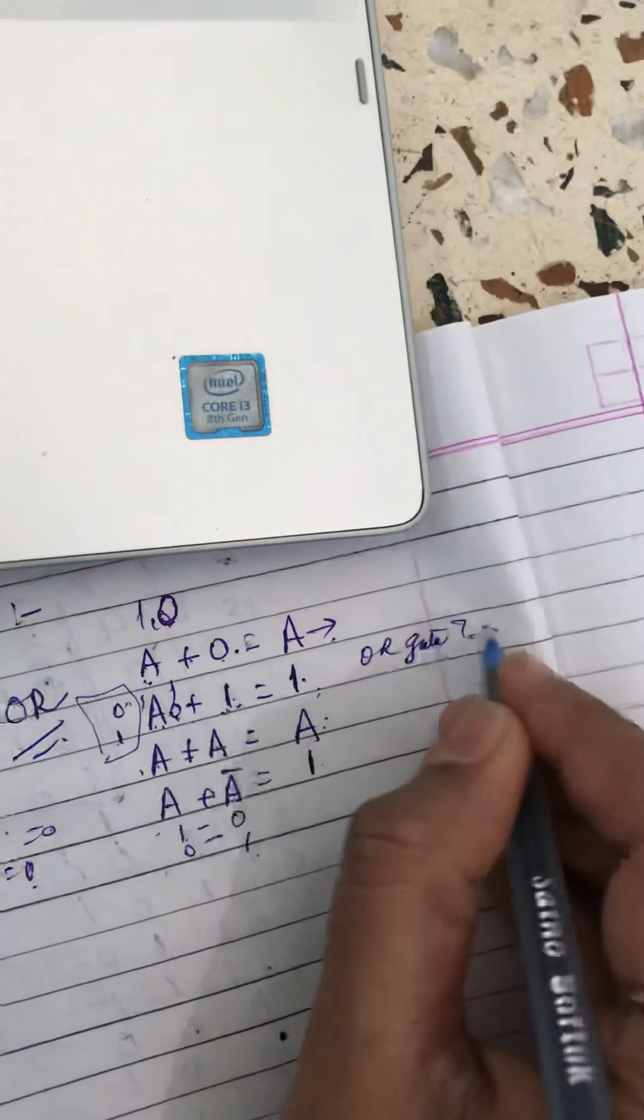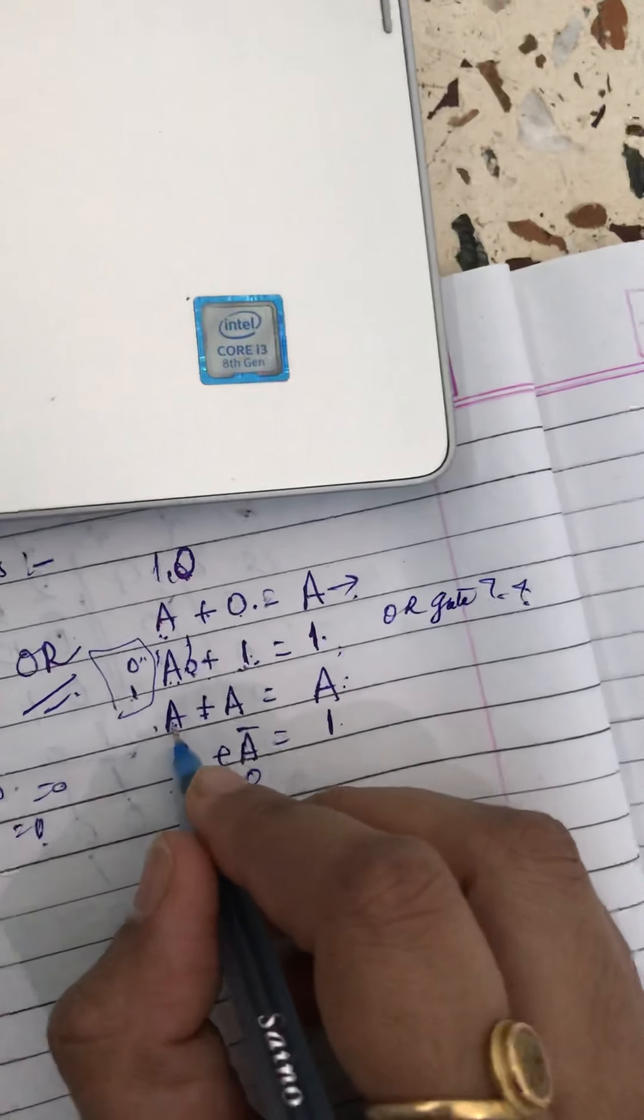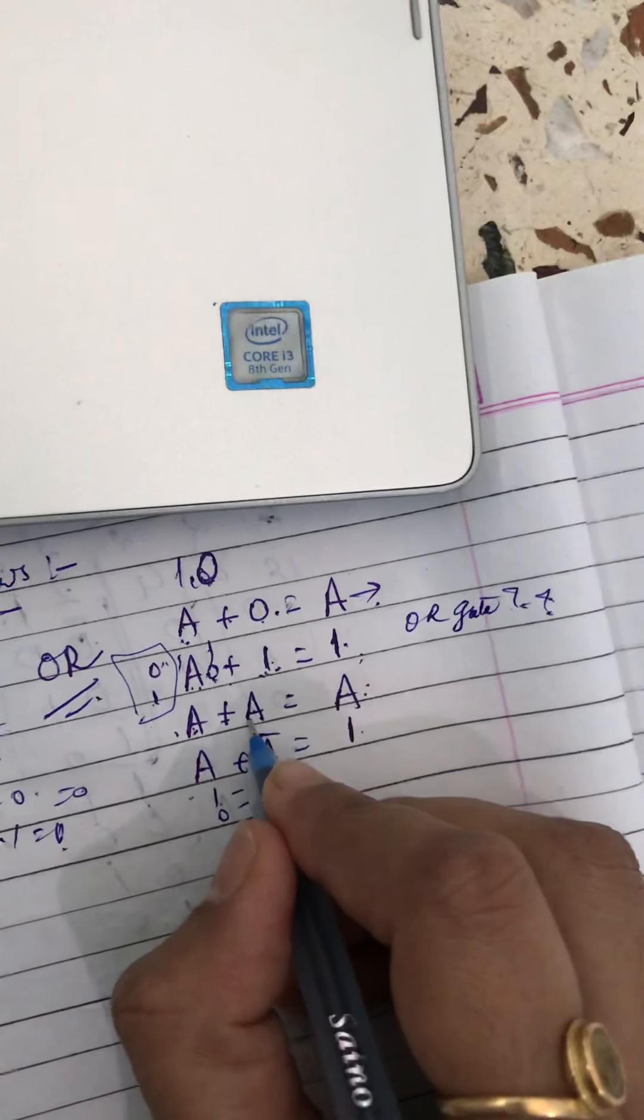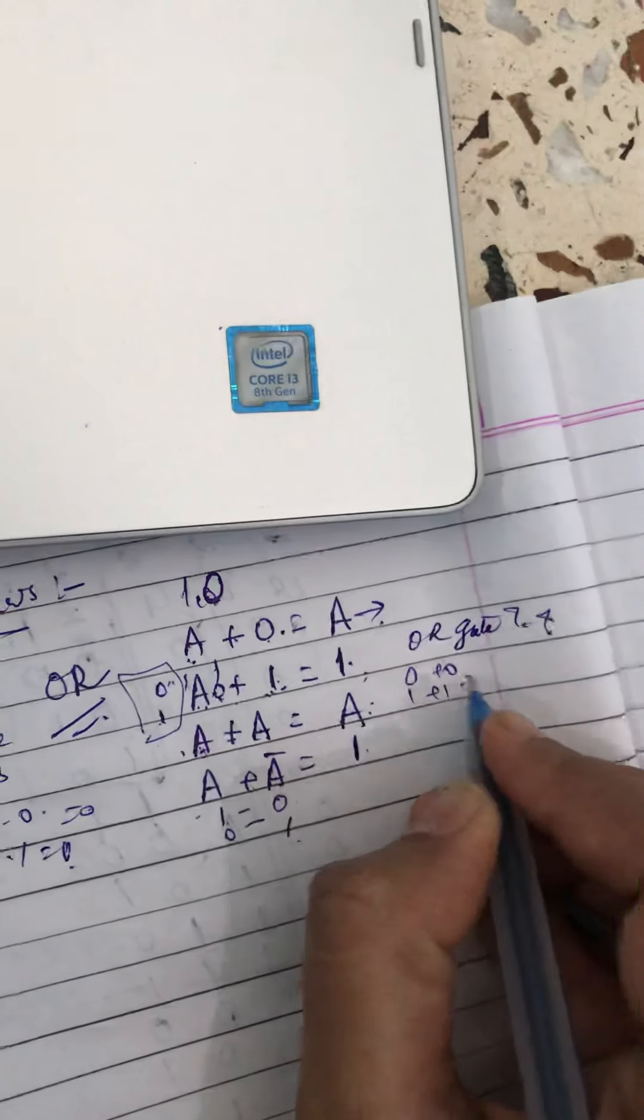Have you seen the truth table? If you're sitting in one of my lectures on logical gates, then A plus A: if it is addition of those numbers, if it is zero plus zero or one plus one...